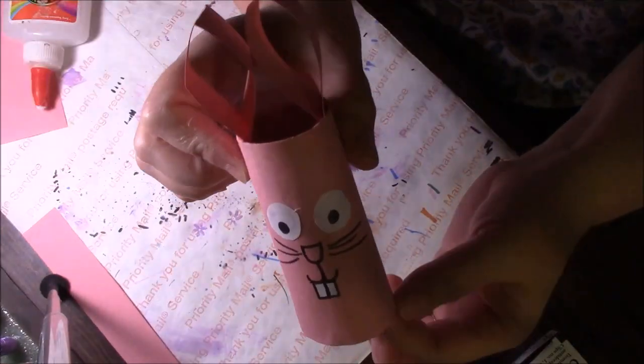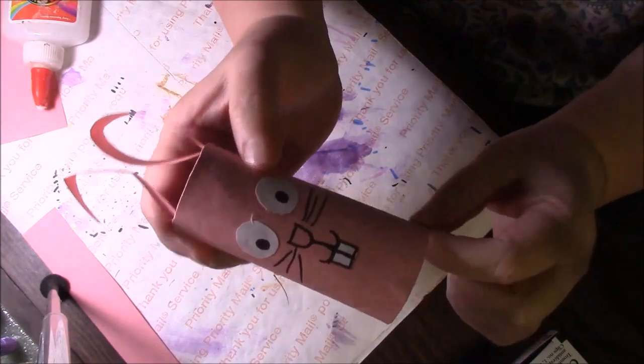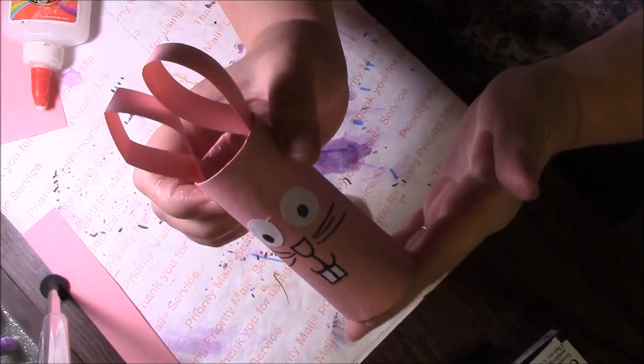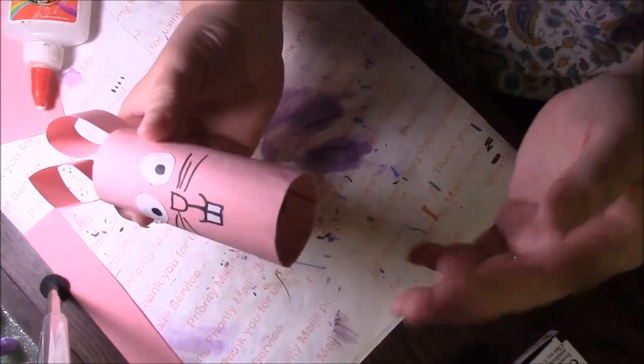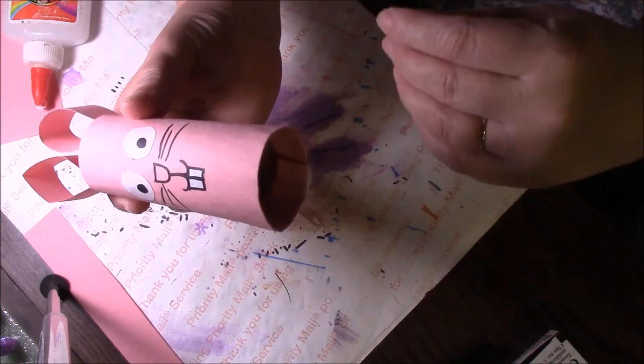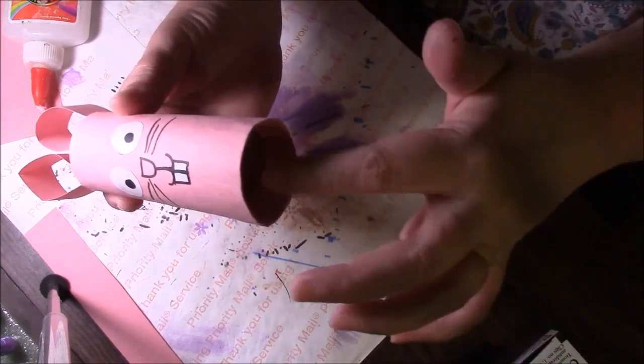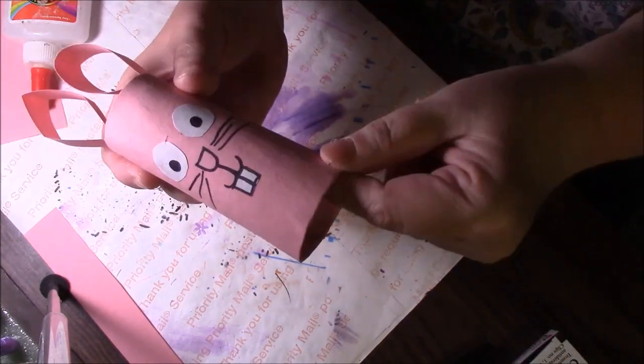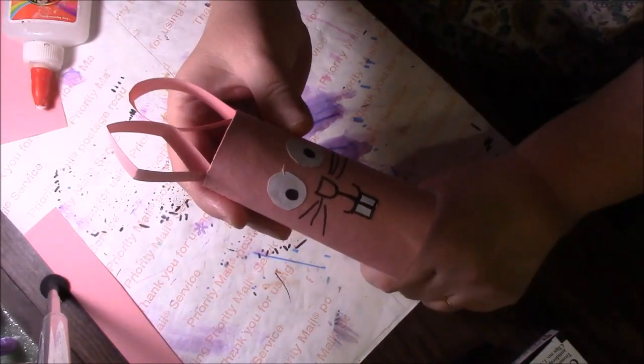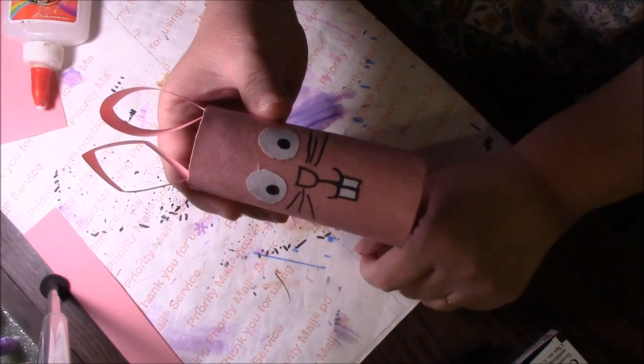We are done. The bunny is completely dry. I just think this would be so cute in an Easter basket. You could make a bunch of these. Take a baggie, fill them with little goodies or non-candy goodies, and just take the baggie, tie it up and stick it inside the toilet paper roll, and then stick a few of these inside the Easter basket. I think the kids would absolutely love that.